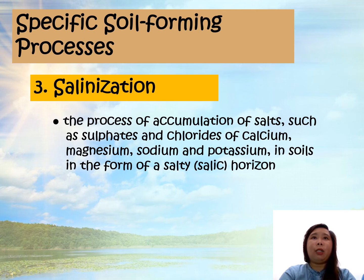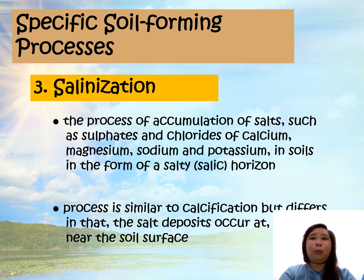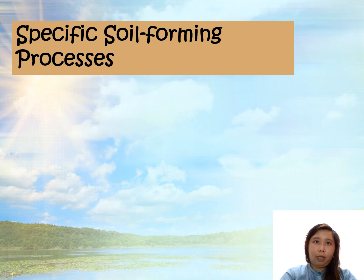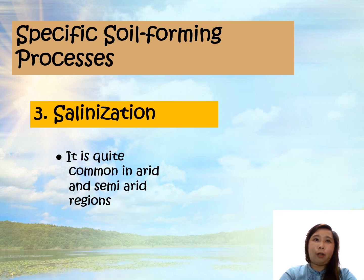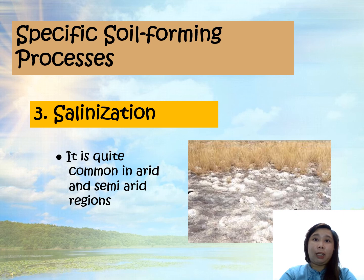Salinization involves potassium in soils in the form of a salty or salic horizon. This process is similar to calcification, but differs in that the soil deposits occur at or very near the soil surface. This process is quite common in arid and semi-arid regions. You can easily notice the salts on the soil surface.